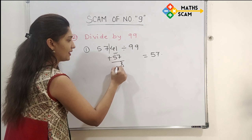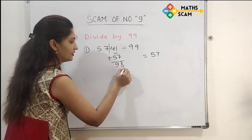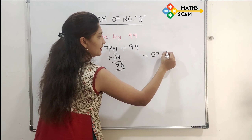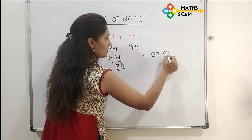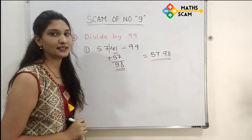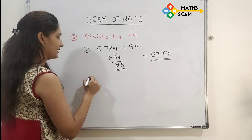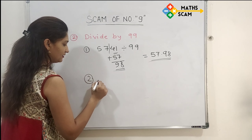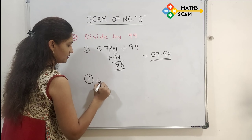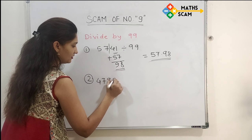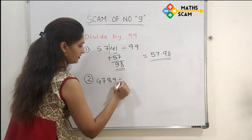Add the second part into the first part: 41 plus 57. 1 plus 7 is 8, 4 plus 5 is 9. So write 98 after the decimal point. This gives us our answer: 57.98.